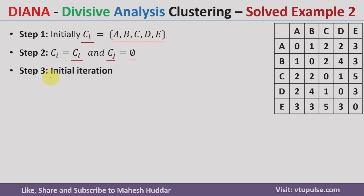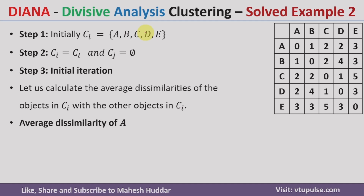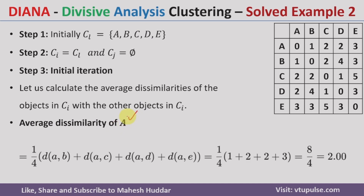In the third step, which we will call the initial iteration, what we do is calculate the average dissimilarity of the objects in CI with the other objects in CI. That means for each object we need to calculate the average dissimilarities. First, I will discuss how to calculate the average dissimilarity of A. Average dissimilarity of A is the average distance of A to all other data points. There are 4 possibilities: distance from A to B, A to C, A to D, and A to E. Because there are 4 possibilities, we take 1 divided by 4 of this value.